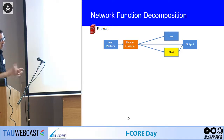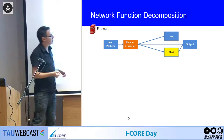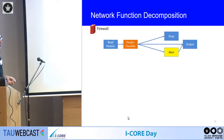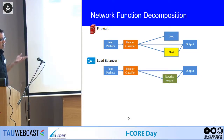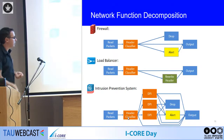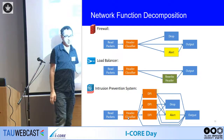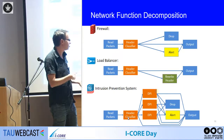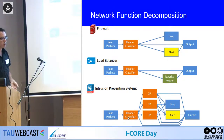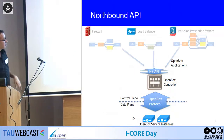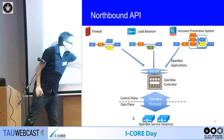Regarding the network function API: with all these blocks we can define network functions on top of the controller, specifying which blocks each function comprises and how to connect them. For example, a firewall reads packets, classifies them, and decides to drop, forward, or alert. A load balancer reads packets, classifies them, then either outputs as-is or rewrites the packet. An intrusion prevention system reads packets, classifies them, may perform deep packet inspection, and decides to drop, output, or alert. All these graphs go to the controller, which merges them and configures the service instances.